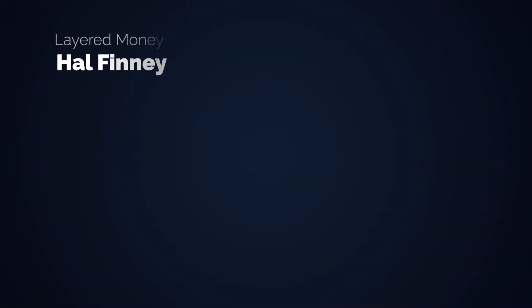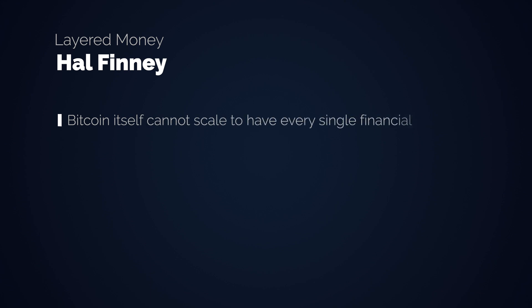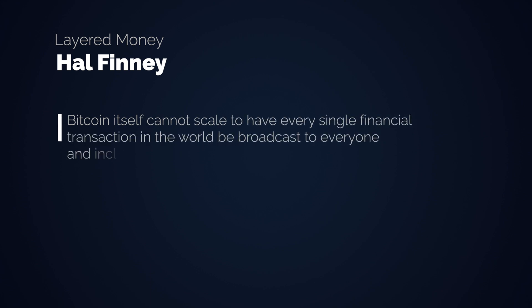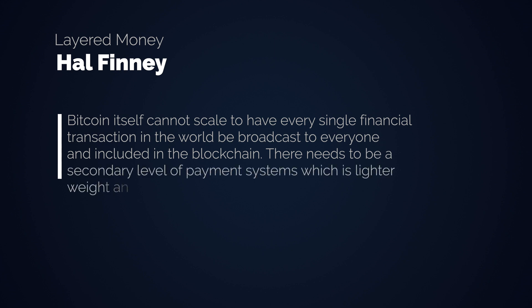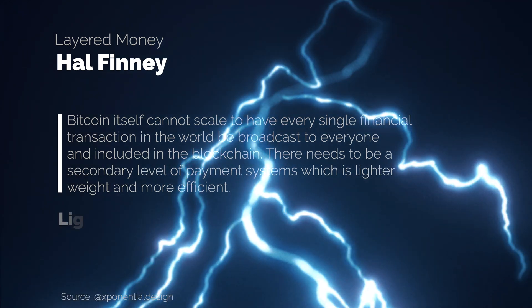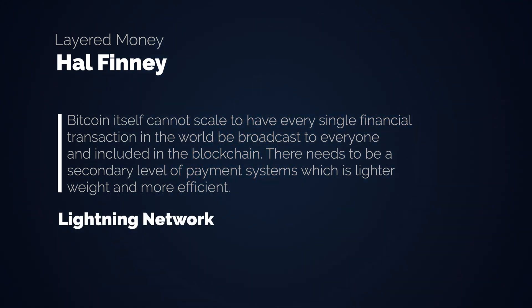Hal Finney, the first recipient of a Bitcoin transaction, knew that Bitcoin will be layered very early on. Bitcoin itself cannot scale to have every single financial transaction in the world be broadcast to everyone and included in the blockchain. There needs to be a secondary level of payment systems which is lighter weight and more efficient. This is where things like the Lightning Network come into play, that allow instant and worldwide transactions at pretty much zero cost and can scale to millions of transactions per second — much more than Visa for example.